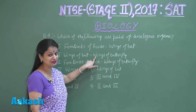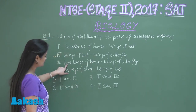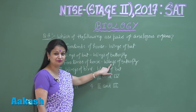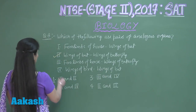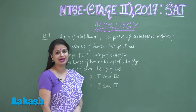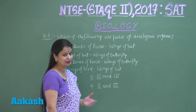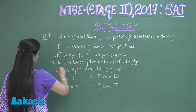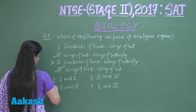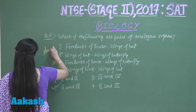Four limbs of horse are for running and wings are for flying — different function, so this won't be analogous. Wings of bird and wings of bat are both involved in flying, function is same, so these are analogous. The analogous categories are option two and four, so the right answer for question eight is option number two.